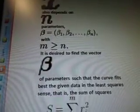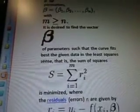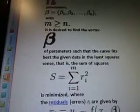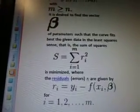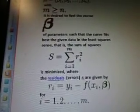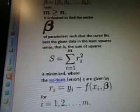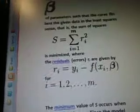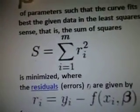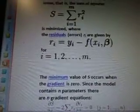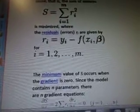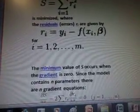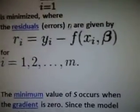Something N, it is desired to find the vector B of parameters such that the curve fits best the given data in the least squares sense, that is the sum of squares. I have no idea what that means either. It is minimized where the residuals (errors) R_i are given by R_i equals Y_i minus F.